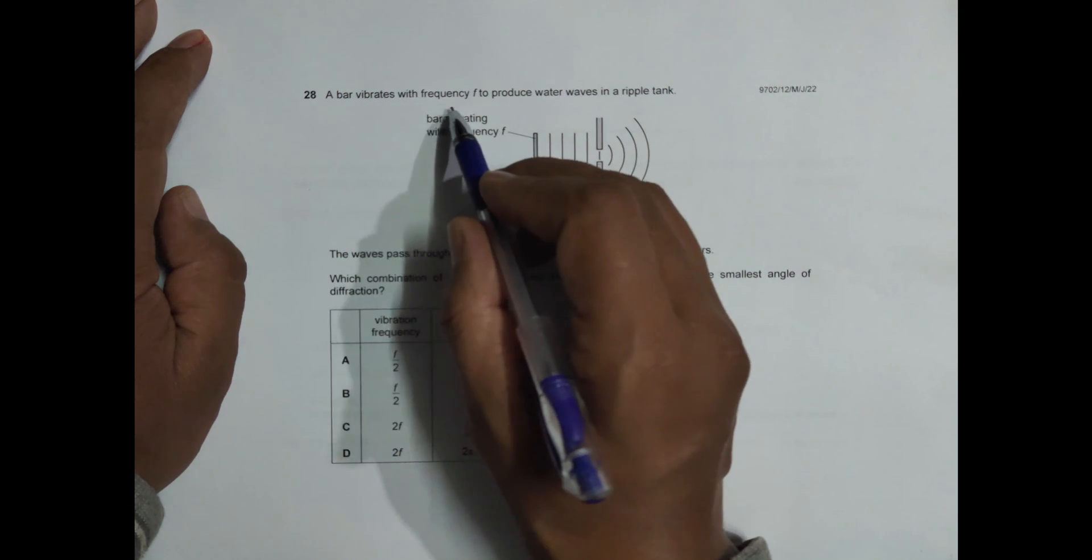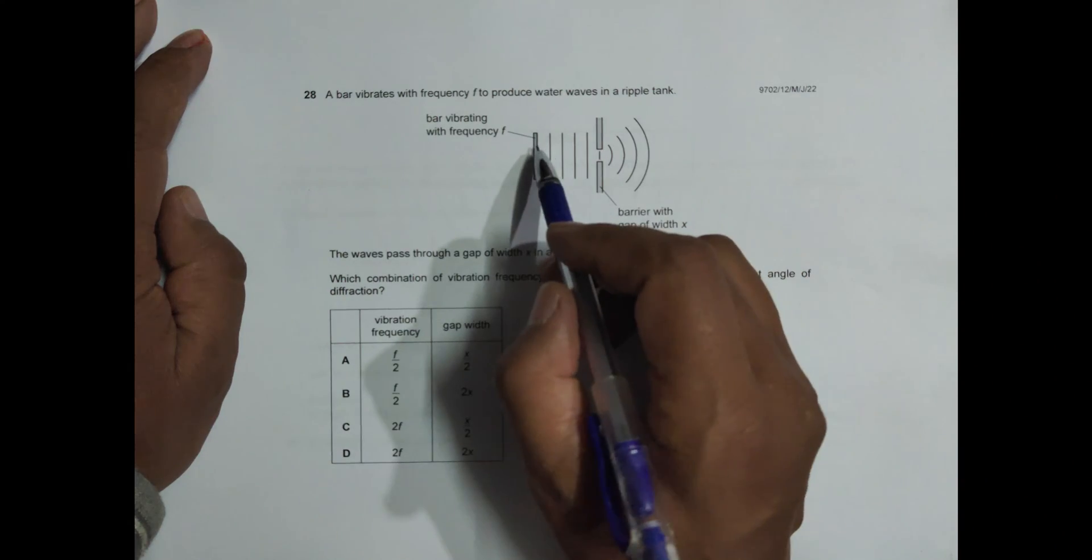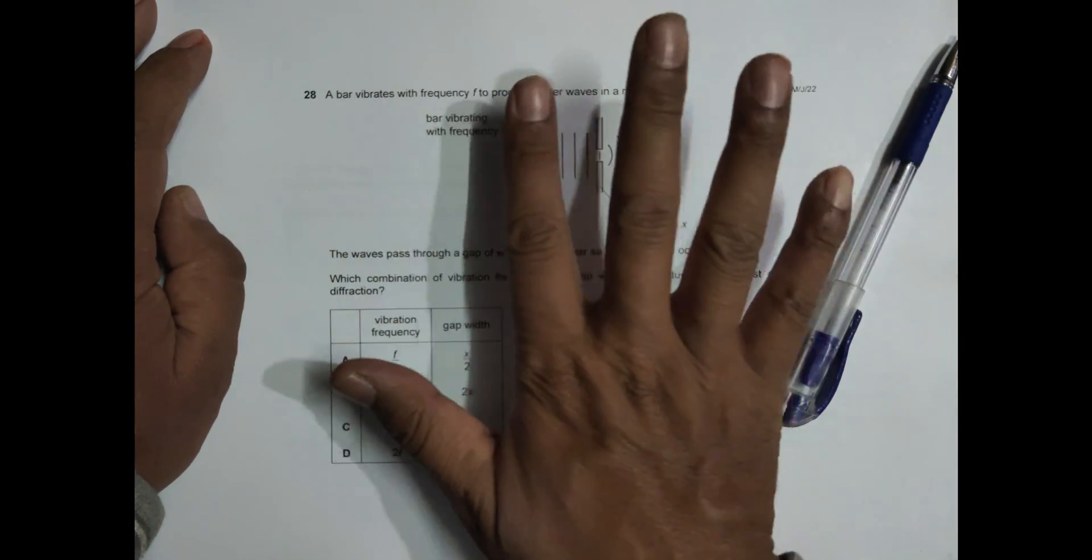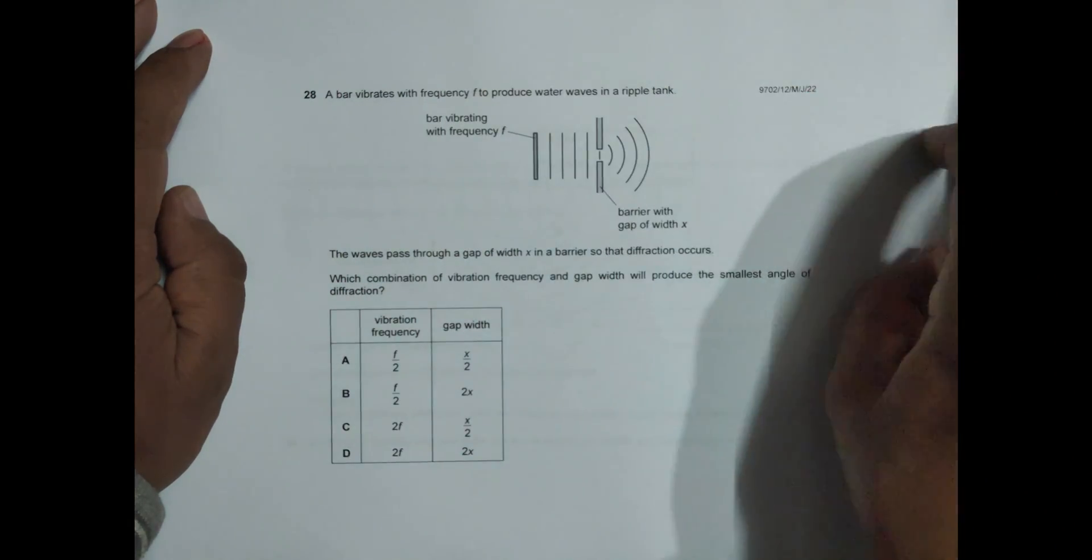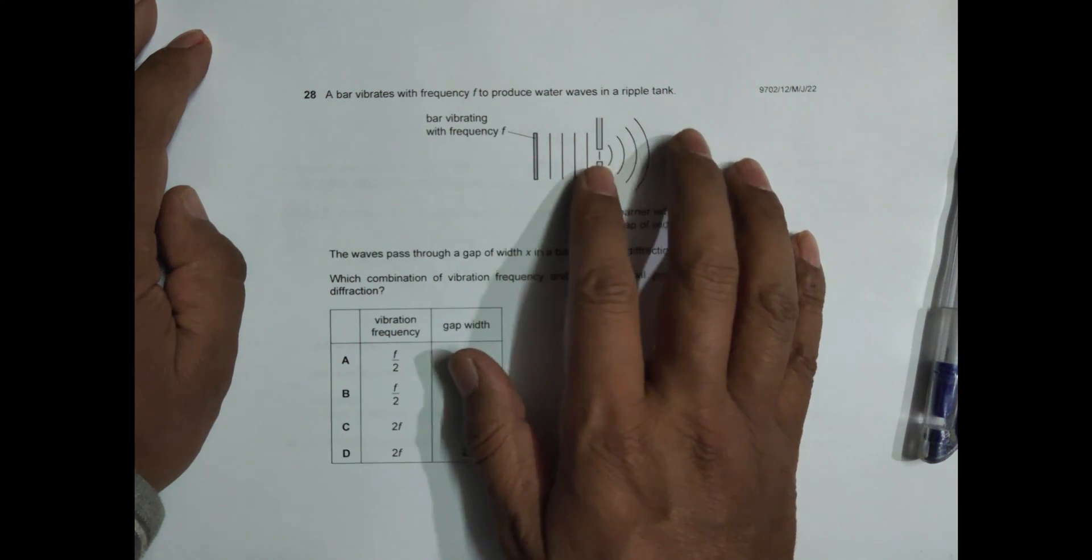It says a bar vibrates with frequency f to produce water waves in a ripple tank. This is the upper view of the ripple tank. There's a bar vibrating with frequency f, going up down up down, touching the water surface and creating ripples.